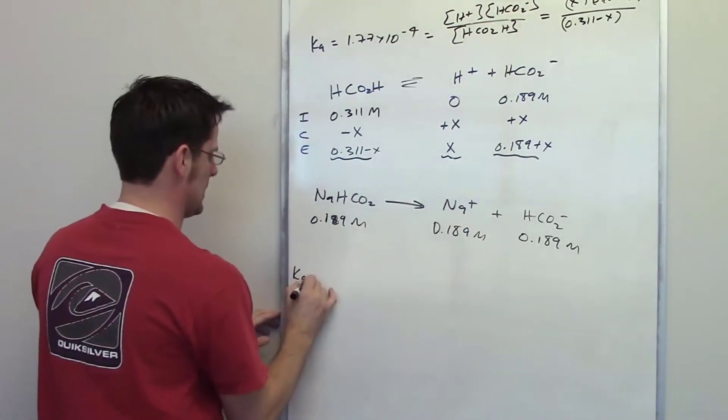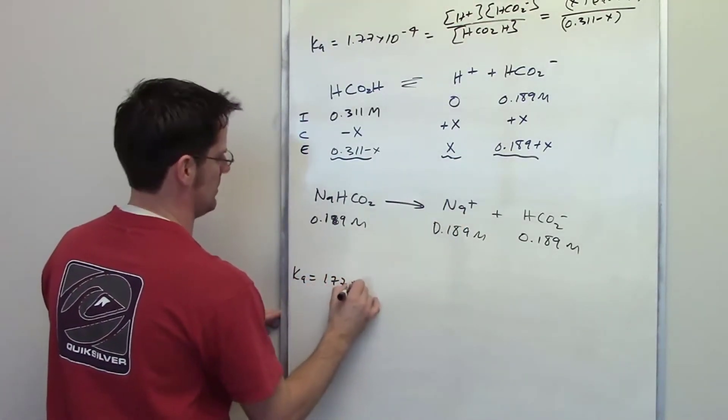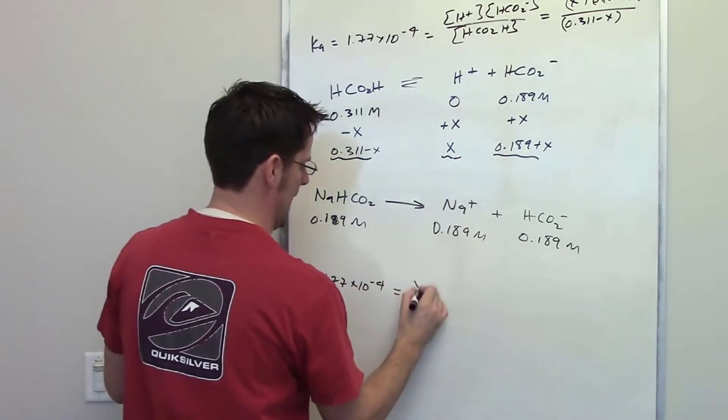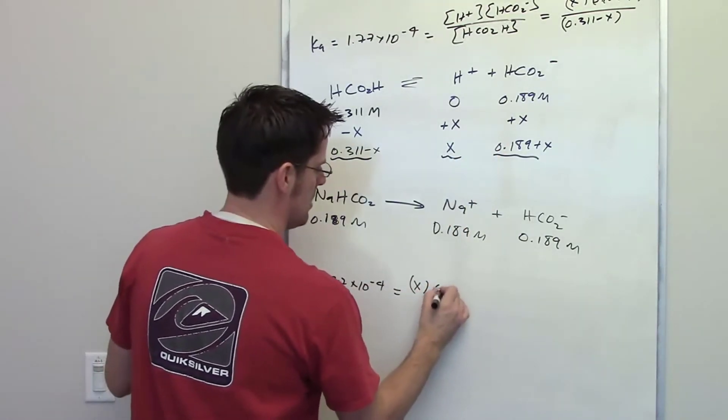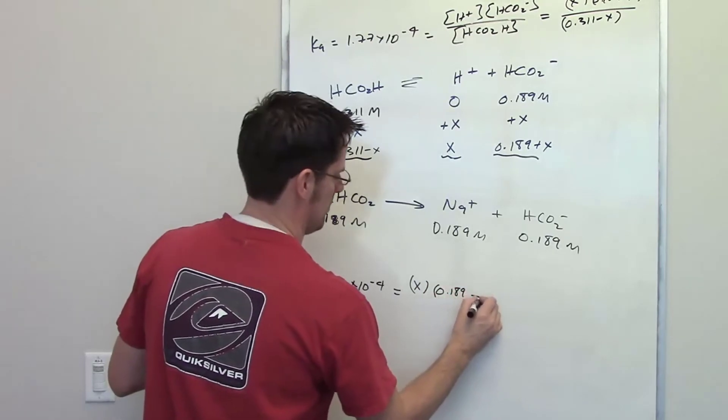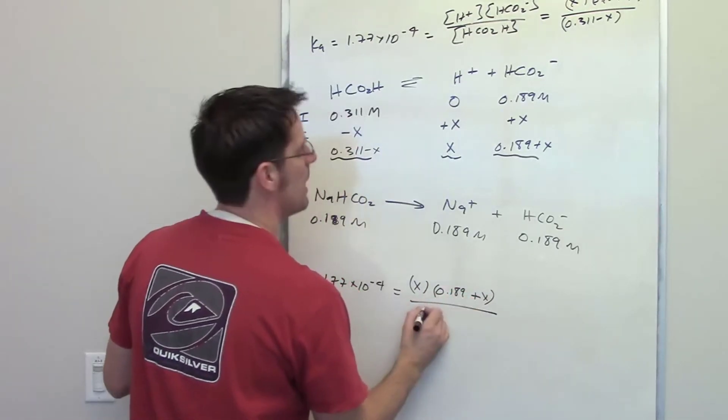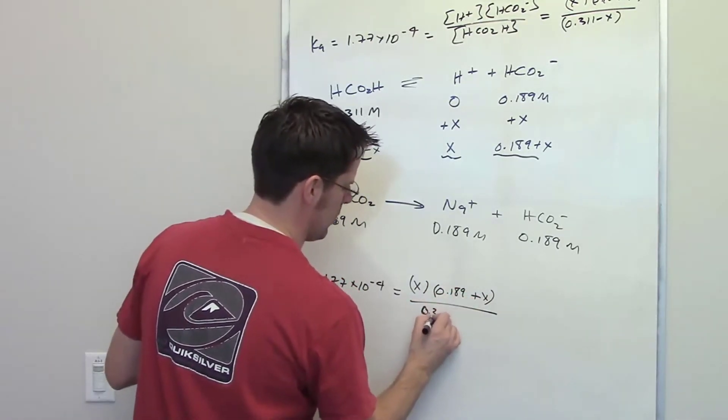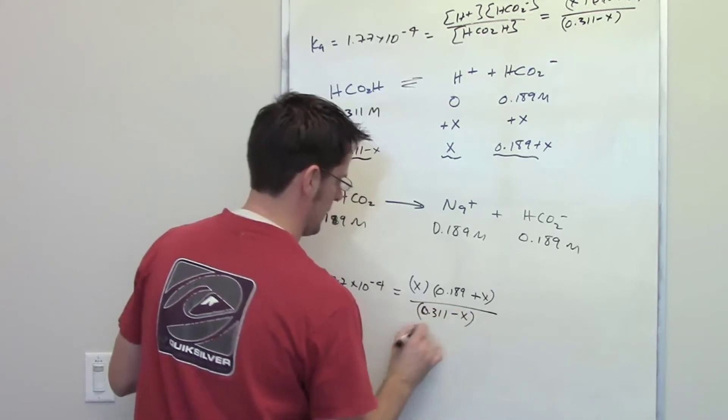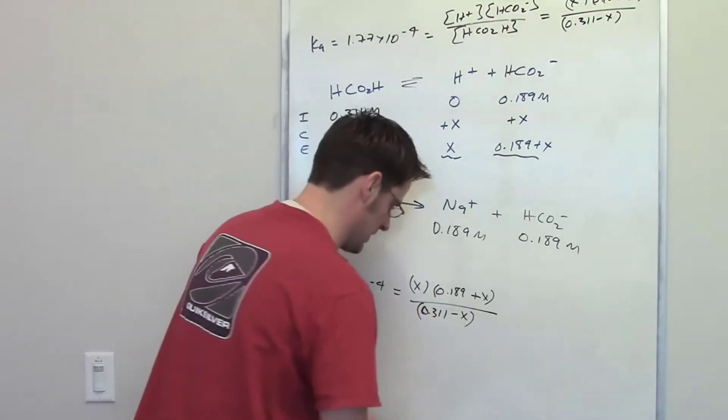So Ka is going to equal 1.77 times 10 to the negative fourth, which is going to be equal to X, multiplied by 0.189 plus X, divided by 0.311 minus X. Now there's a trick which I showed you in a previous example as well, and that is this.